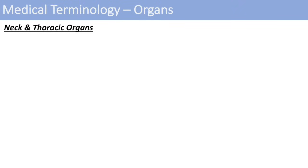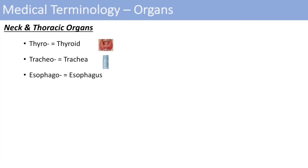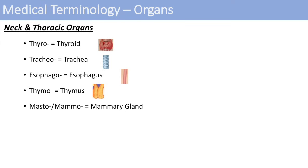The next organs are the neck and thoracic organs. Starting with the thyroid — thyro is the prefix. Tracheal is for trachea. Esophageal or esophago is for the esophagus. Thymal is for the thymus, the immune system organ relatively close to your heart. Masto or mammo relates to the mammary gland or breast. Palmo or pneumo is for the lung. And cardio is for the heart.